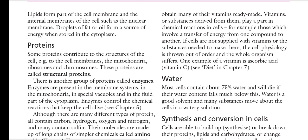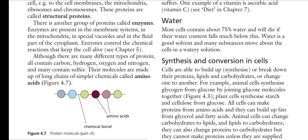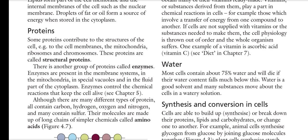In the next section we will discuss proteins. Proteins are categorized into many categories: structural proteins, functional proteins, enzymes, hormones, and many others. As the name suggests, structural proteins are proteins that participate in the formation of the cell membrane. Some proteins contribute to the structure of the cell membrane, the mitochondrial membrane, the ribosomes, and the chromosomes — these are called structural proteins.